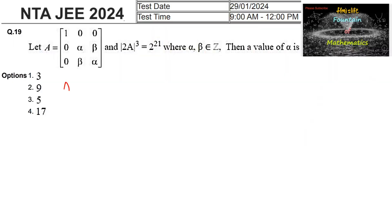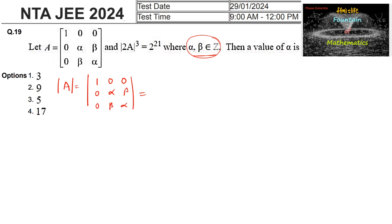Let A be the matrix with rows [1, 0, 0], [0, α, β], [0, β, α], and det(2A)³ = 2²¹, where α and β are integers. The determinant of A expands as 1 times (α² - β²), so det(A) = α² - β².